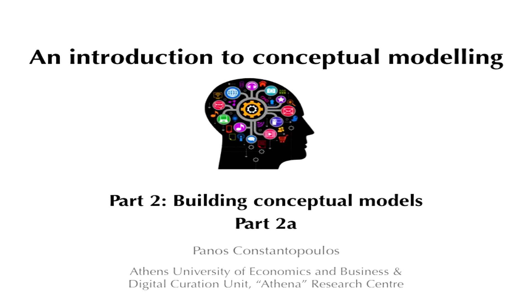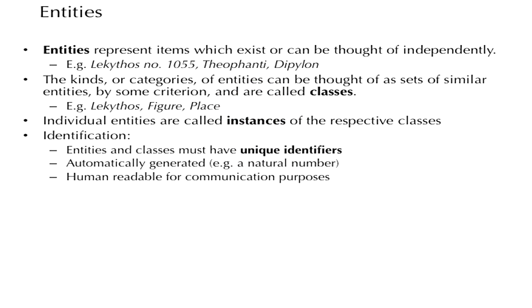We shall now turn to examine in detail the building blocks of conceptual models and the process of building conceptual models. We'll start with entities — entities represent items which exist or can be thought of independently. An example entity is Lekithos number 1055 Theophanti Dipilon. The kinds or categories of entities are called classes, which can be thought of as sets of similar entities, similar by some criterion. So we have the classes of Lekithos, figure, and place. Individual entities are called instances of the respective classes.